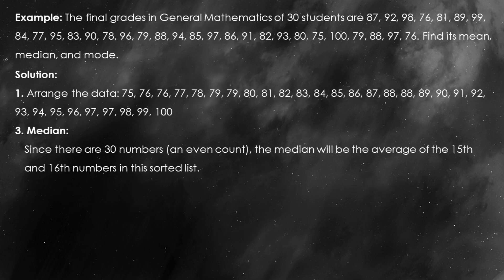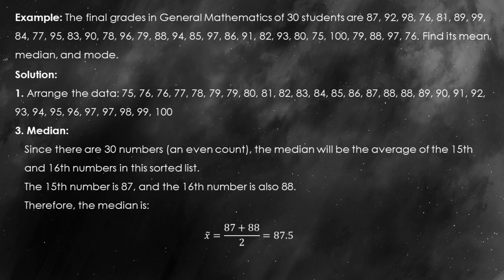Next, we'll calculate the median, which is the middle value when the data is ordered. Since we have an even number of grades — 30 in total — the median will be the average of the 15th and 16th numbers in the ordered list. The 15th grade is 87 and the 16th grade is 88. So the median equals 87 plus 88 all over 2, which gives us 87.5. Therefore, the median grade is 87.5.